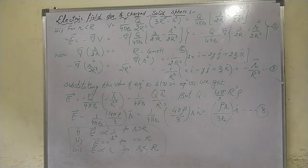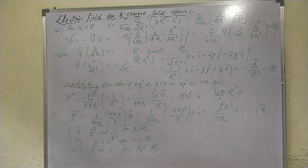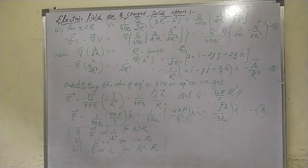This is the result for the electric field due to a charged solid sphere of radius R. The electric field is inversely proportional to the square of the distance when R greater than R; when R is equal to R the electric field is zero; and when R less than R the electric field is directly proportional to the distance. These are the most important points. Hope you enjoy this lecture, thank you very much.